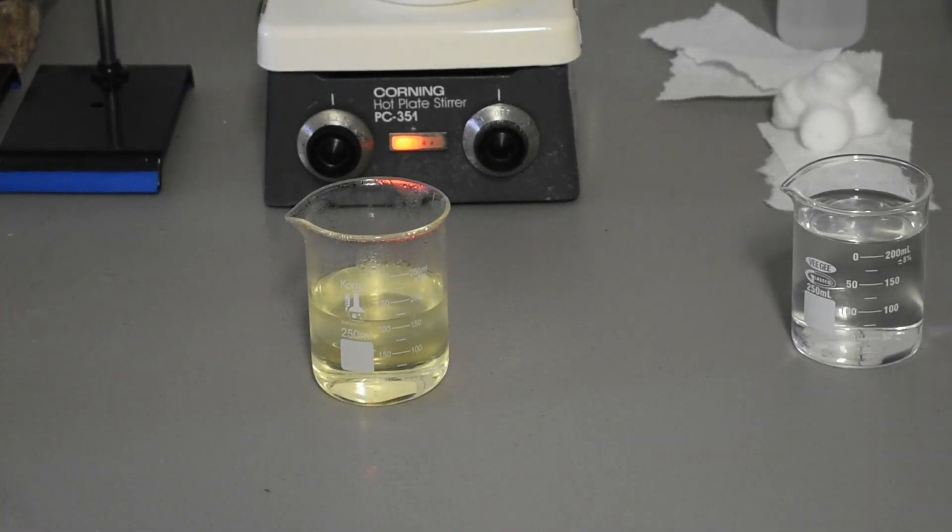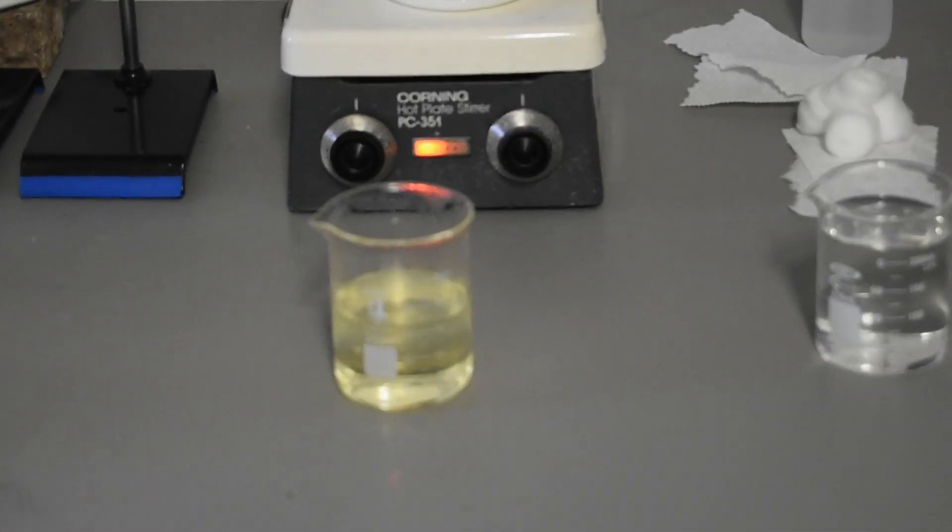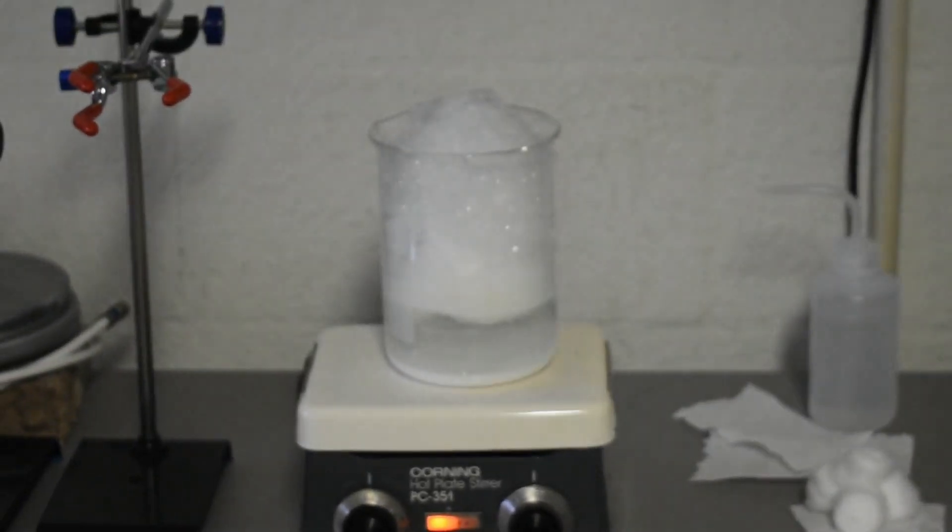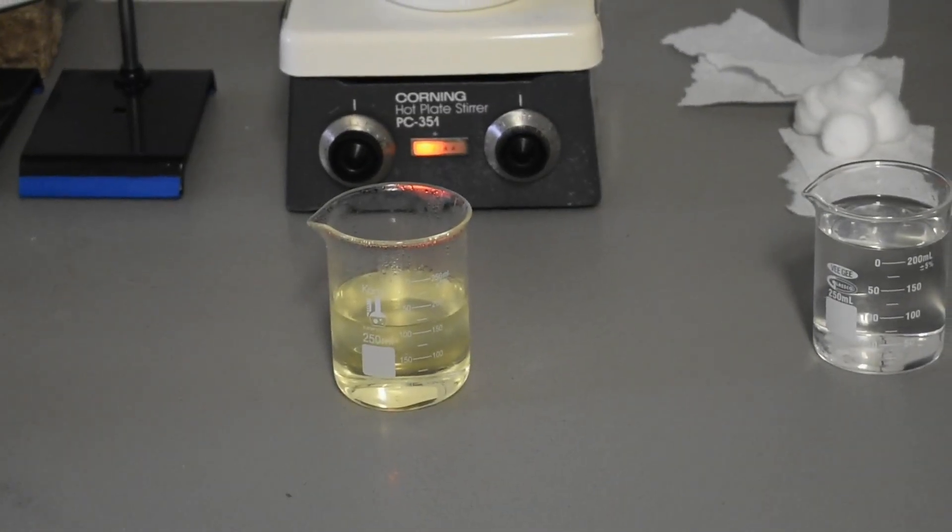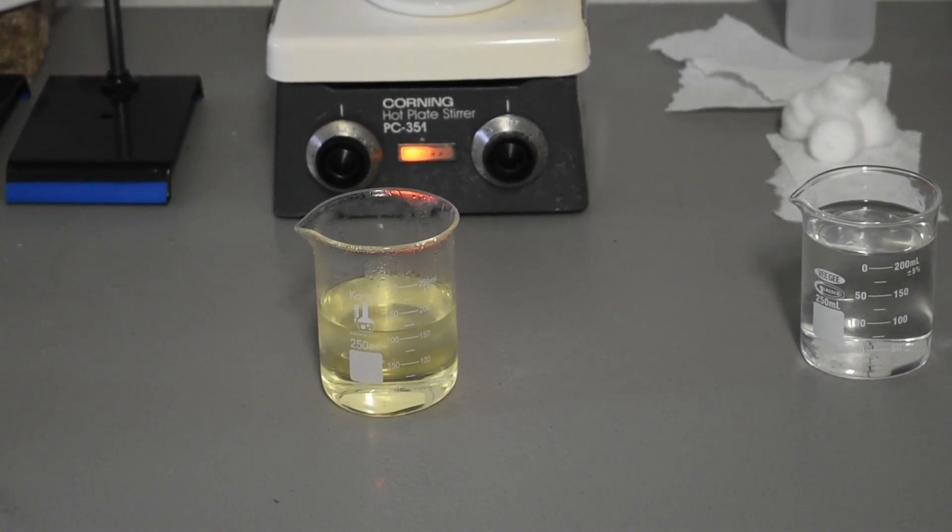So the cotton balls are still soaking in the bicarb solution. You can see it's still bubbling quite a bit. I put it on the hot plate just to get it out of the way, but I'm going to add the paper towels to the nitration mixture now.